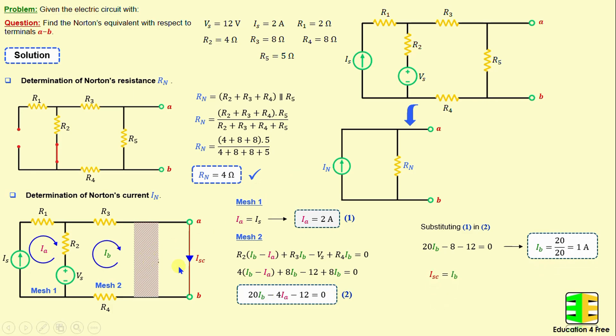If we look here, the current ISC is equal to IB. That means the short circuit current ISC is equal to 1 amp. And we know that the Norton's current IN is the short circuit current calculated between terminals A and B. That means IN is equal to 1 amp. The Norton's equivalent with respect to terminals A and B is a 1 amp current source in parallel with a 4 ohms resistor.